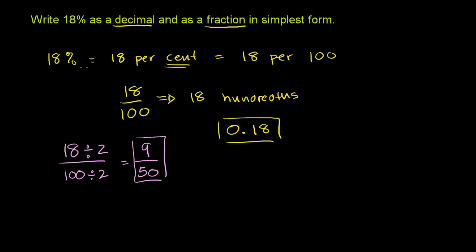So we have 18% is the same thing as 0.18, which is the same thing in simplest form as 9 fiftieths.